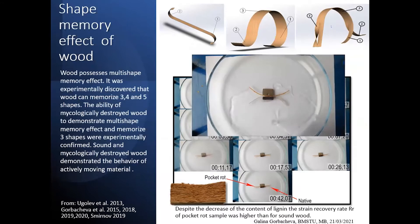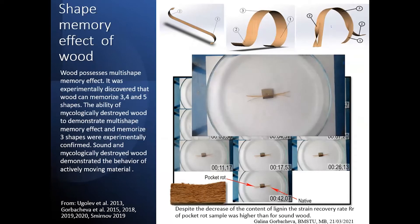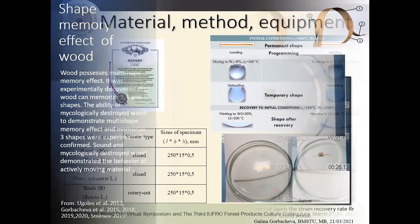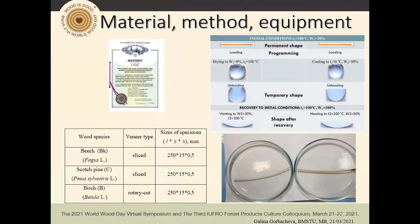Sound and mycologically destroyed wood both demonstrate the behavior of actively moving material. Despite the decrease in lignin content in a decayed sample, recovery was faster than for sound wood. For this research, samples of peach and pine-sliced veneer, and birch rotary-cut veneer along the grain were used. Study of deformative conversions and visualization were carried out on the veneer samples by a previously developed and patented method, which determines all components of hygro-thermo-mechanical strains of wood on one sample.